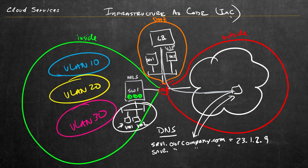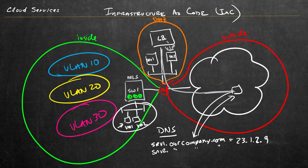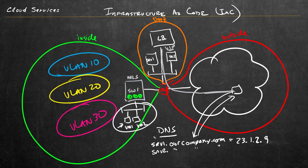What does this have to do with infrastructure as code? Well, there's a lot that can go wrong with rolling out a topology like this, including the load balancer, the virtual machines, the networking, the VLAN assignments, and everything else. If we were asked to roll this out by hand in, say, two hours, we could do it, but it's very likely we'd have a mistake or two in the mix.